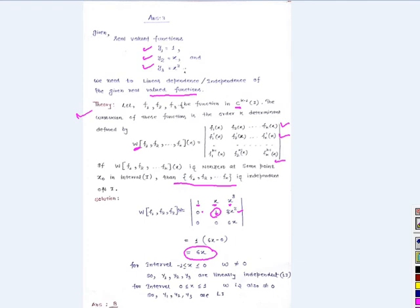The interval is also important. For the interval -1 to 0, if W ≠ 0, then y₁, y₂, y₃ are linearly independent in this interval. Similarly, for the interval 0 to 1, W is also not equal to zero, meaning y₁, y₂, y₃ are linearly independent.